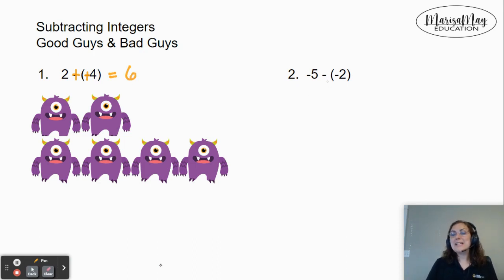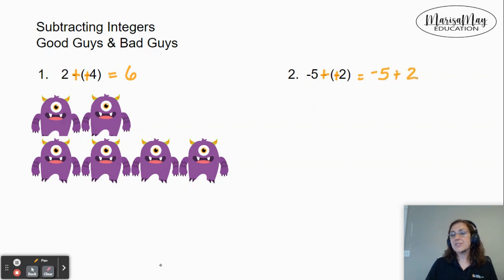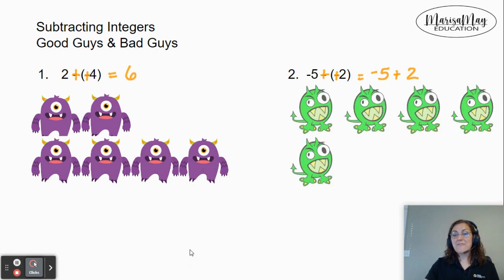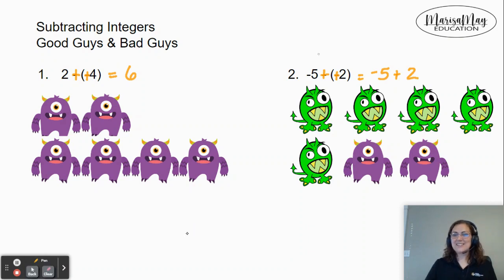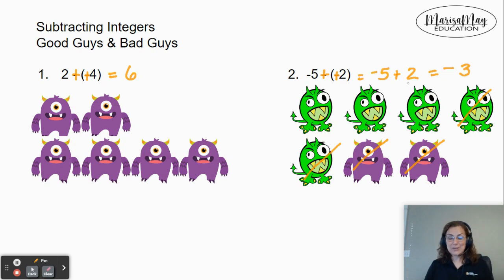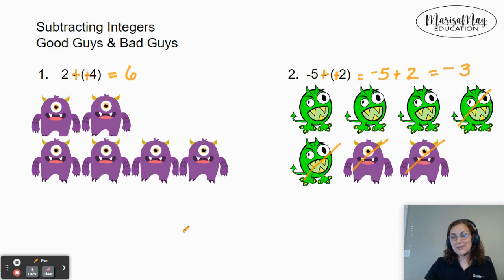Let's do one more: negative 5 minus negative 2. I'm going to add a line to the subtraction to make it addition, and change the sign of the next number. So my problem really is negative 5 plus positive 2. I have five bad guys battling two good guys. The bad guys are going to win — by three. So our answer is negative 3: negative because the bad guys win, and three because that's how many are left over. I hope this helps with the 'add a line, change a sign' method to change subtraction to addition.